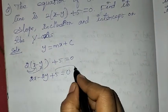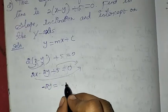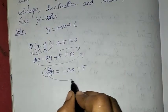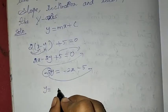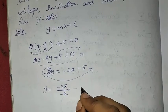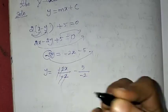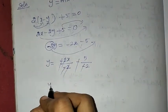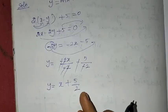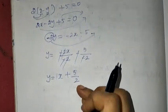We need to isolate y. Rearranging: −2y = −2x − 5. Dividing both sides by −2, the minus signs cancel: y = x + 5/2. Comparing with y = mx + c, we get m = 1 and c = 5/2.